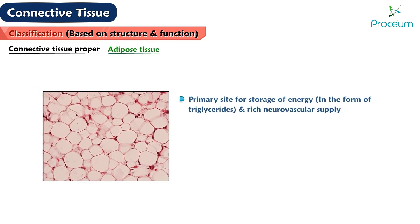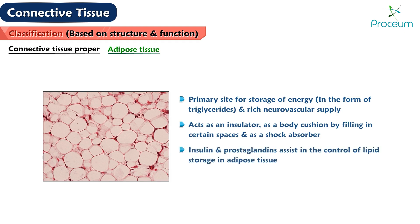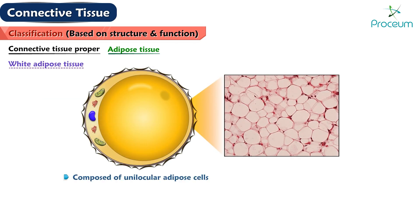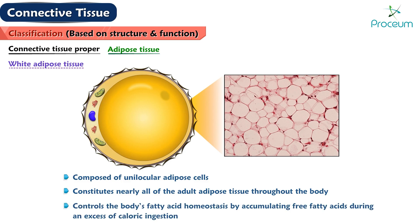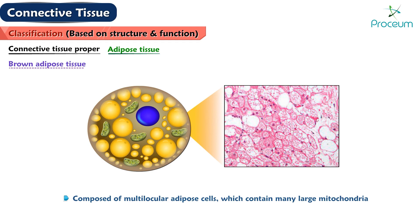Adipose tissue is the primary site for storage of energy in the form of triglycerides and has a rich neurovascular supply. It acts as an insulator, as a body cushion by filling in certain spaces, and as a shock absorber. Insulin and prostaglandins assist in the control of lipid storage in adipose tissue — for example, hypodermis and panniculus adiposus. White adipose tissue is composed of unilocular adipose cells and constitutes nearly all adult adipose tissue. It controls the body's fatty acid homeostasis by accumulating free fatty acids during caloric excess and releasing them during caloric scarcity. Brown adipose tissue is composed of multilocular adipose cells which contain many large mitochondria.